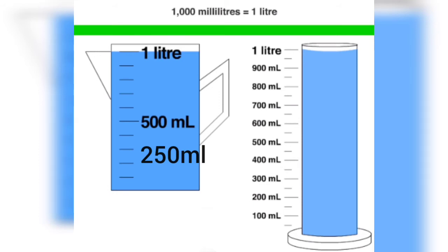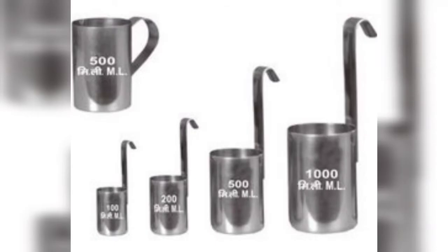If we half it, we will get 500 ml, and if we half this 500 ml again, we will get 250 ml. It means 250 ml is a quarter of a litre. Have you ever seen these kinds of containers? Yes, they have been used by milkmen. This container, 1000 ml, is actually a container to measure 1 litre. And then here, 500 ml, 200 ml, and 100 ml. These containers are used to measure smaller quantities of a liquid.